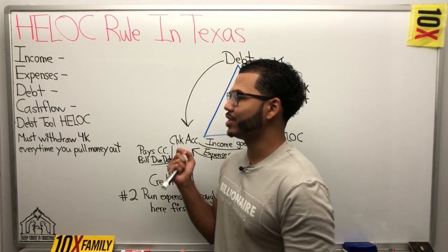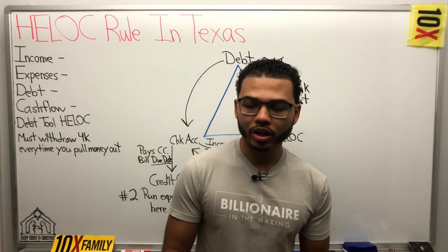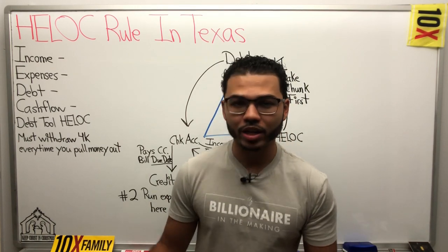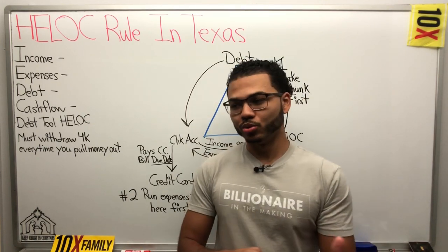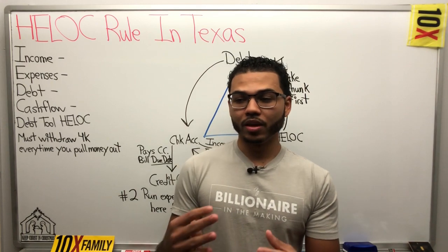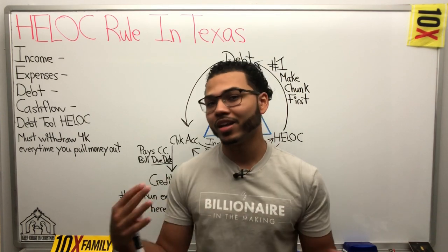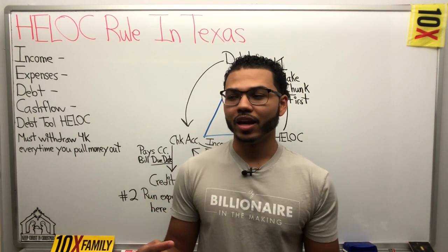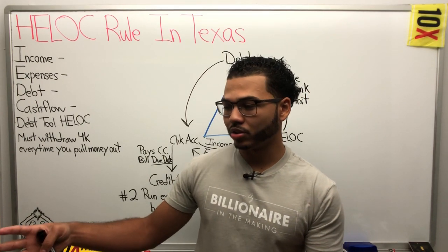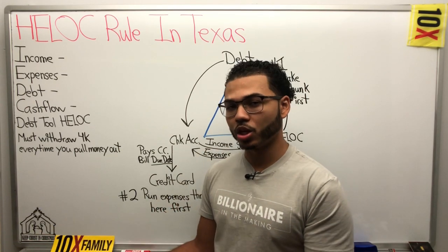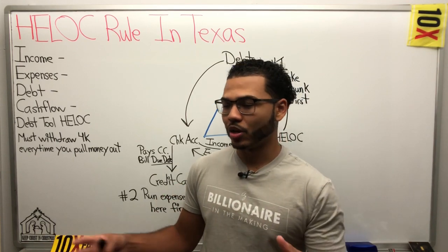So real quick, in Texas, if you have a home equity line of credit, there is a rule. I forgot the name of it, but I just know that whenever you go to withdraw — take money out of your HELOC to do velocity banking — the minimum withdrawal has to be $4,000. So the question is, how do I get around that if I'm doing velocity banking and I only need to pull out 500 bucks to pay my bills for the next couple of days after making a chunk? I've got to withdraw four grand every single time. So how do I get around that?